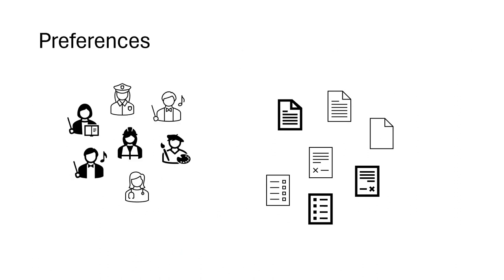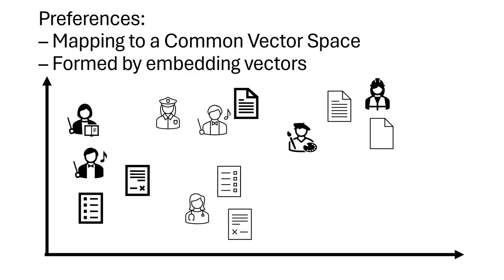The core idea of the recommendation system is to identify user preferences and, based on these preferences, to recommend items which suit the preferences the most, or recommend a list of items ordered according to such preferences. This is usually done by mapping users and items to a common vector space formed by embedding vectors.